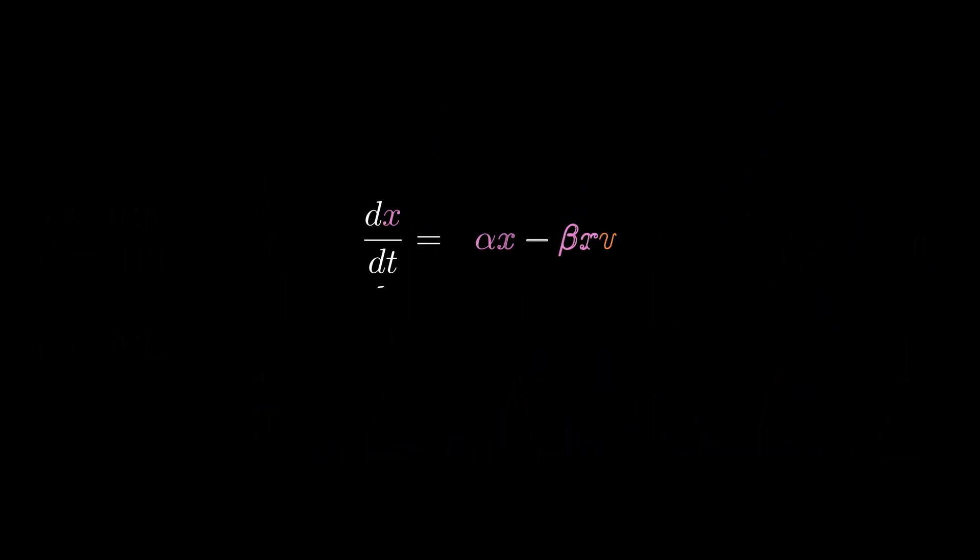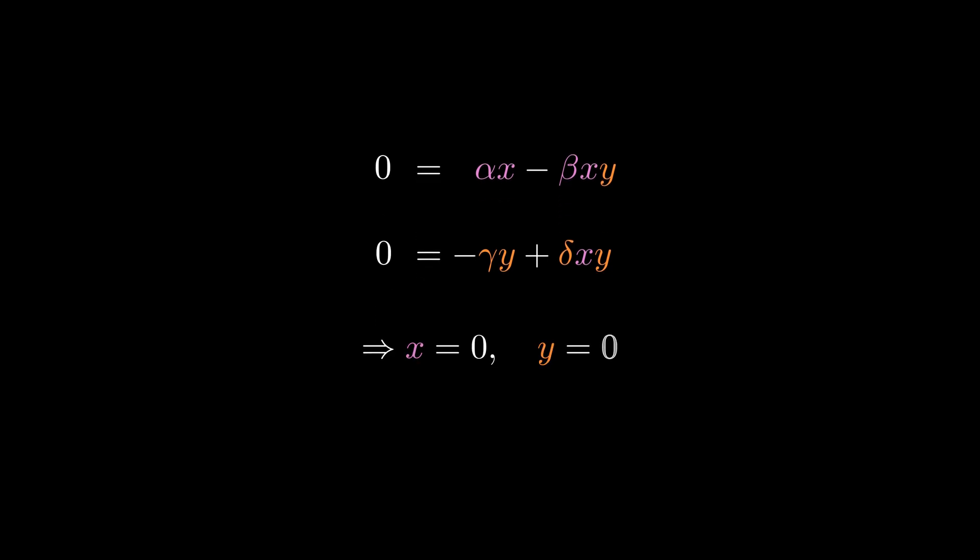Now, one last interesting property of the system is when the populations are in equilibrium. This means that neither population changes so the rate of change is zero for both. We can then solve for x and y to see which conditions must be met for an equilibrium. The first case is not very interesting. That is when both are zero. This means that both populations are extinct which of course leads to an equilibrium where nothing happens ever.